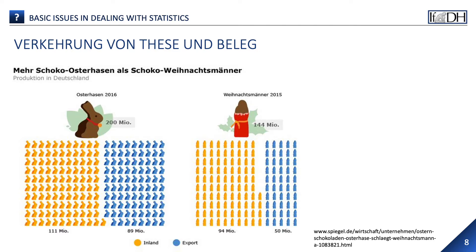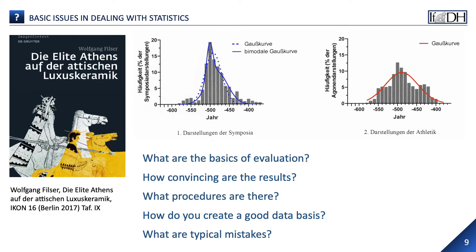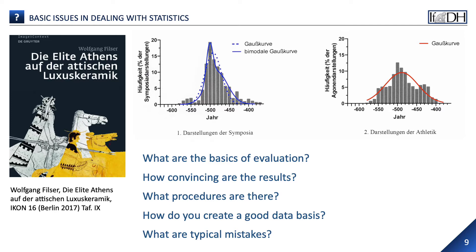The basic error here lies in the reversal of thesis and evidence. A thesis was not proved or disproved by an investigation, but figures were first collected and then a suitable thesis was found. A similar approach is sometimes taken in the humanities — for example, when Wolfgang Filser statistically compares vase paintings with depictions of drinking and sporting activities and then draws conclusions from them about the self-image of the Athenian elite. We will take this example today to point out certain errors that occur more frequently, and deal primarily with fundamental questions: what are the basics of evaluation, how convincing are the results, what procedures are there, how do you create a good database, and what are the typical mistakes?